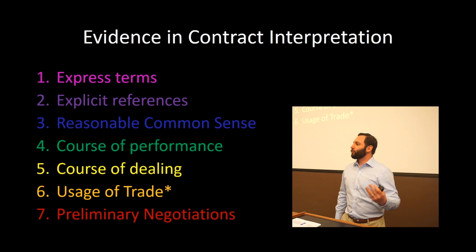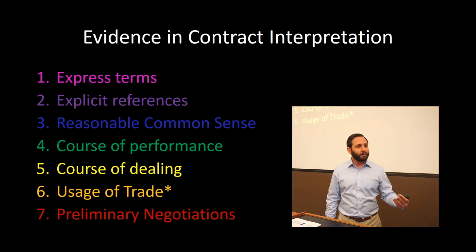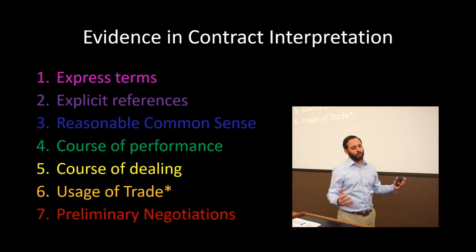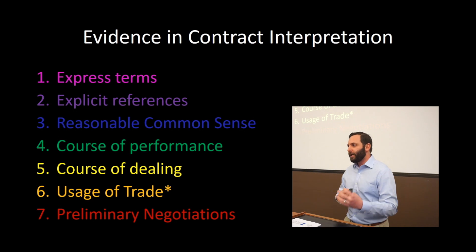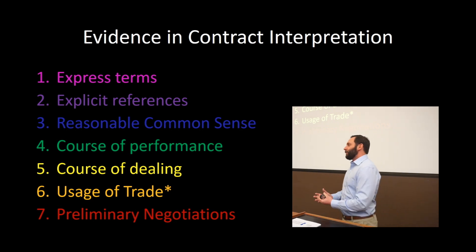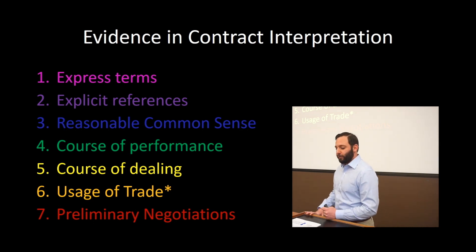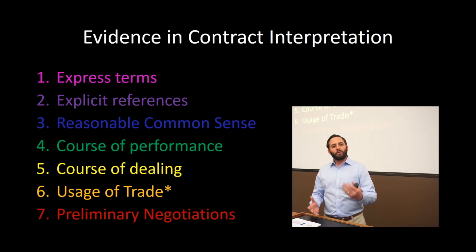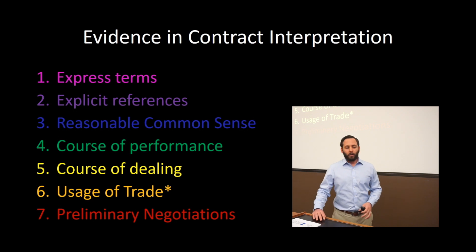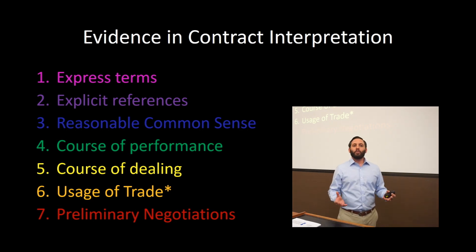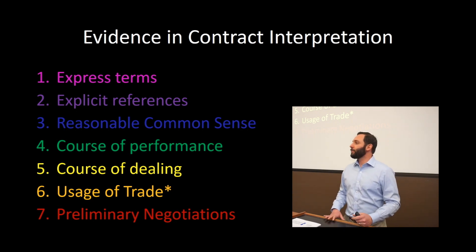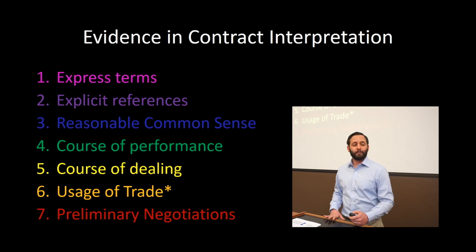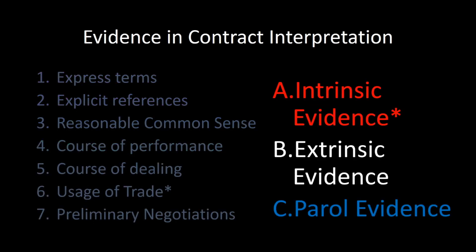Leading at the top — the most persuasive evidence — are the express terms the parties actually wrote, and explicit references to extra-contractual terms, for example in statutes. Reasonable common sense pervades that conversation. Then we get into the extrinsic evidence — things that were not written but might inform the contract — including course of performance, course of dealing, and usages of trade. Preliminary negotiations also forms our understanding of the contract insofar as it tells us what the parties intended. But the parol evidence rule bars certain evidence of preliminary negotiations where it is at odds with what the parties actually wrote. So we can break these seven types of evidence into three basic concepts: intrinsic evidence, extrinsic evidence, and then special rules dealing with parol evidence.